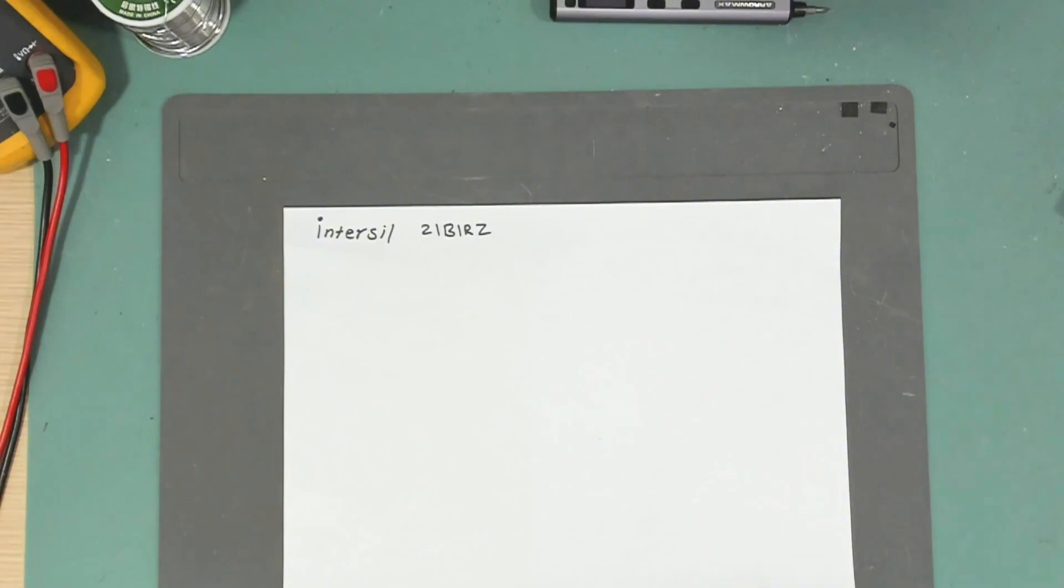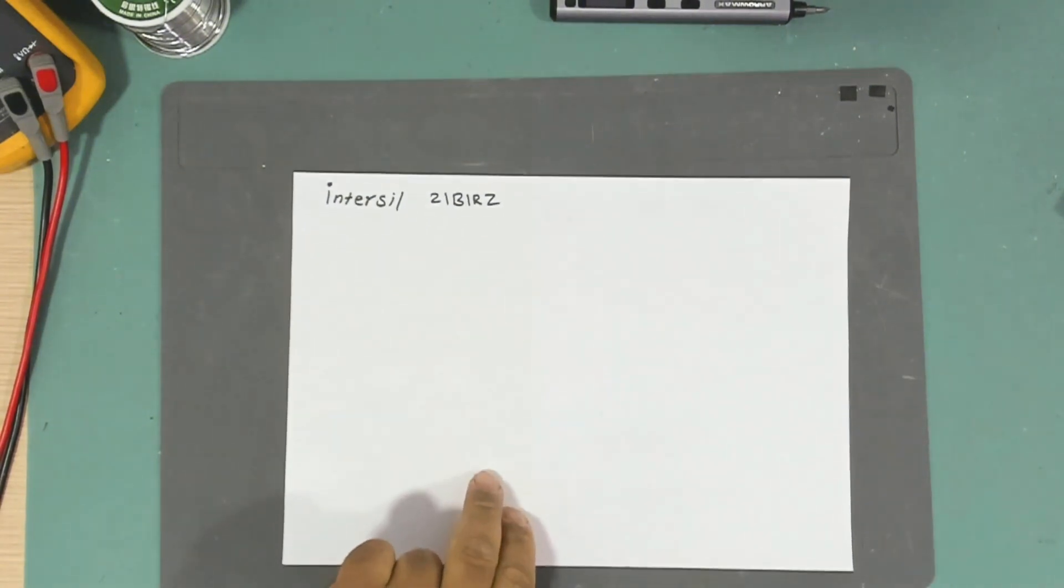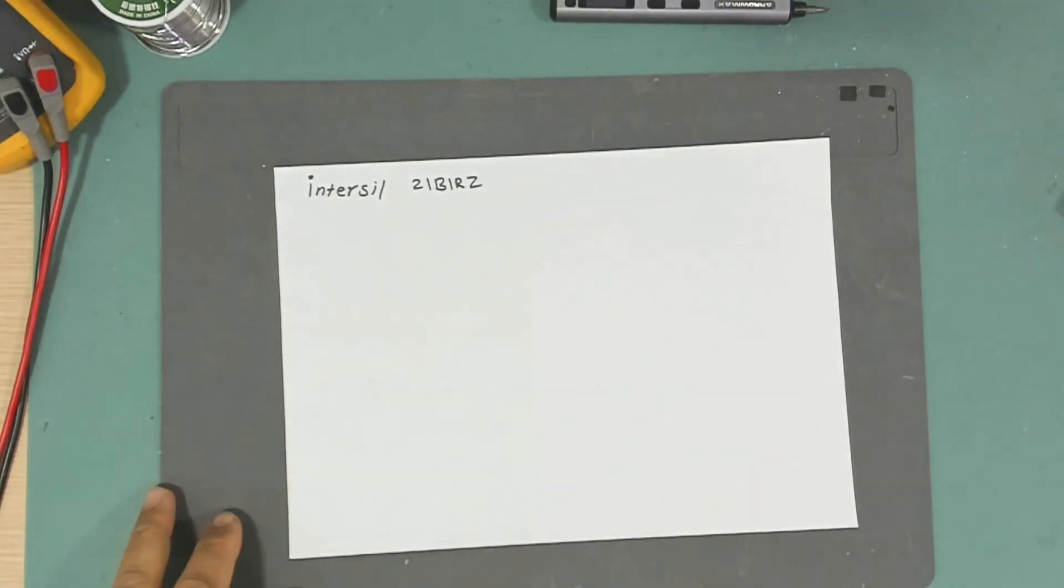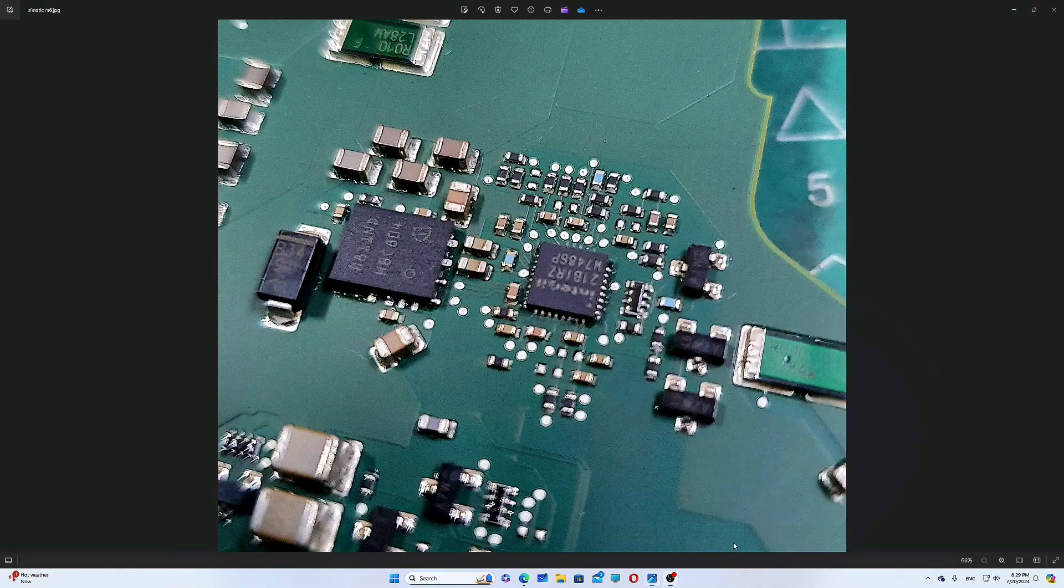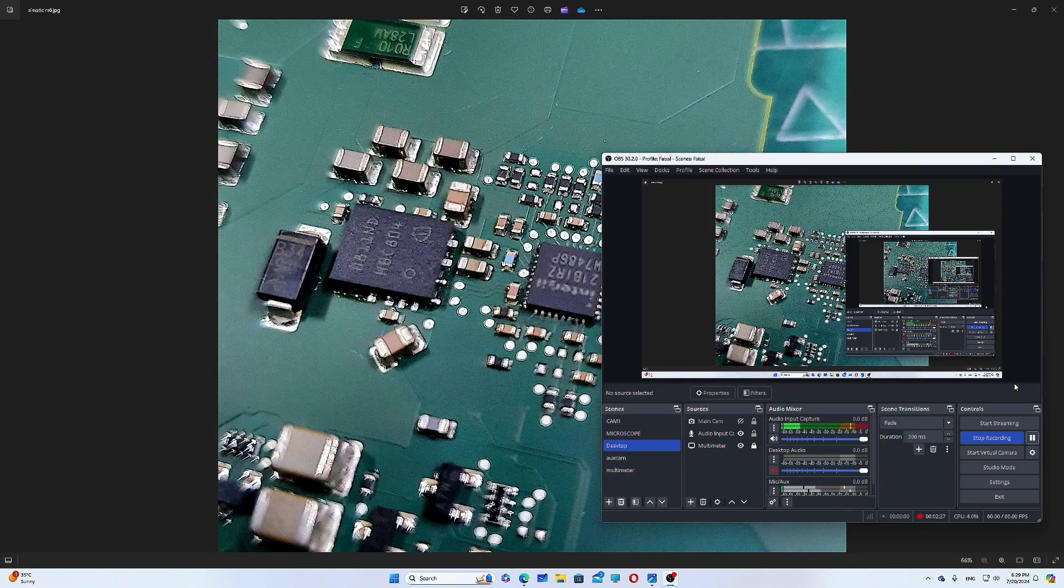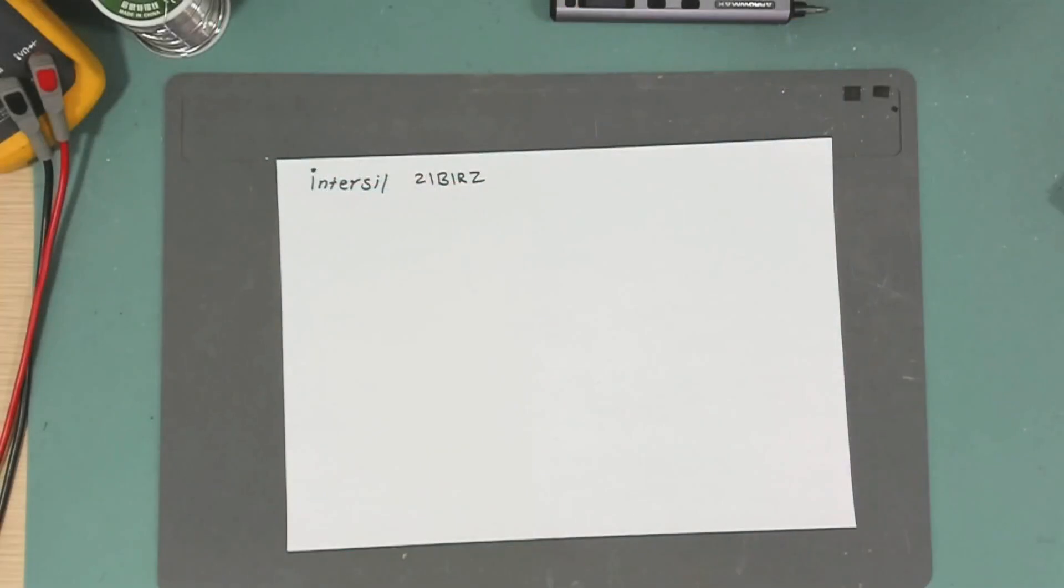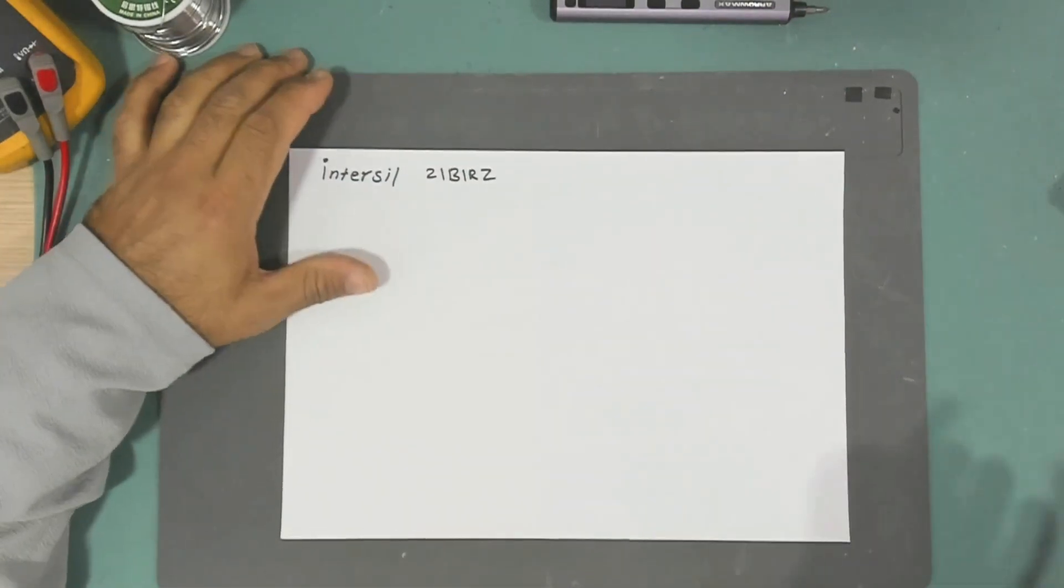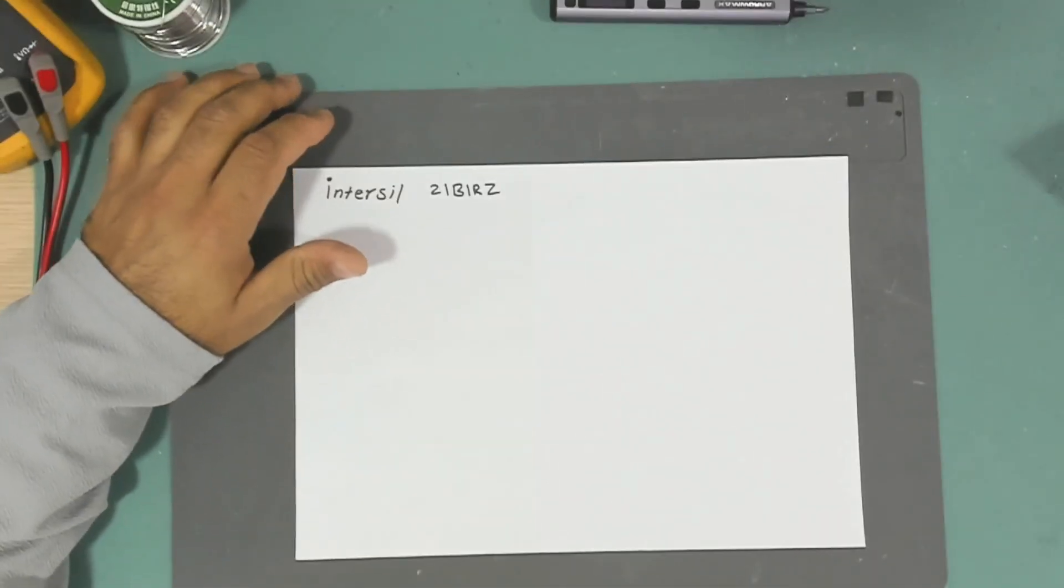Let me first bring a picture of the Intersil and the circuit of it. Okay, so here is the IC that I was working on. This IC is, as you can see, Intersil 21P IRZ, and this is the circuitry where I was working. Let's go back to the camera and explain what was wrong with that laptop.